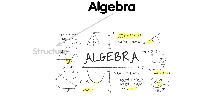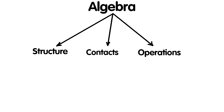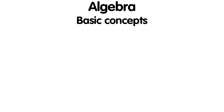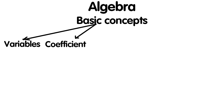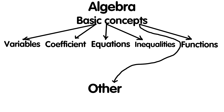Algebra is a branch of mathematics that studies the structure, relationships and operations between symbols and numbers. Basic concepts of algebra include variables, coefficients, equations, inequalities, functions and more. Let's break it down in more detail.